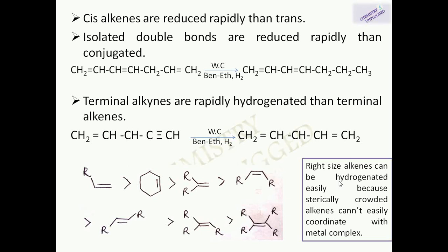The right size of alkyne is required to be hydrogenated easily by Wilkinson's catalyst, because Wilkinson's catalyst is a very sterically crowded or hindered molecule. Therefore a large or complex alkyne cannot easily coordinate with the metal complex, while a simple or right-sized alkyne can attach easily and be reduced. The preference order for hydrogenation by Wilkinson's catalyst is: monosubstituted alkyne, then cyclohexene, then disubstituted cis-alkene, then trans-alkene, then trisubstituted alkene, and lastly tetrasubstituted alkene.